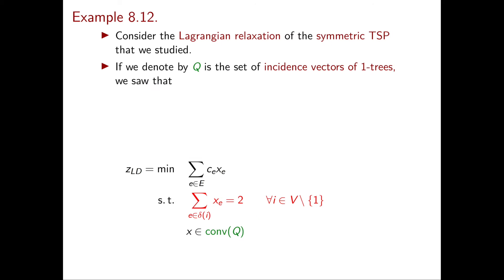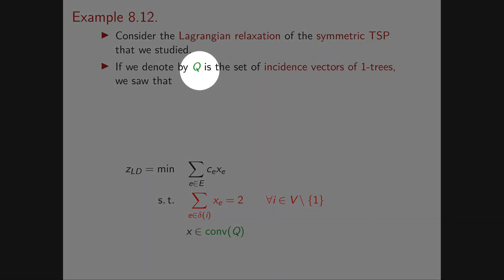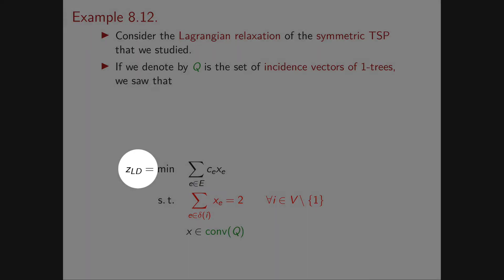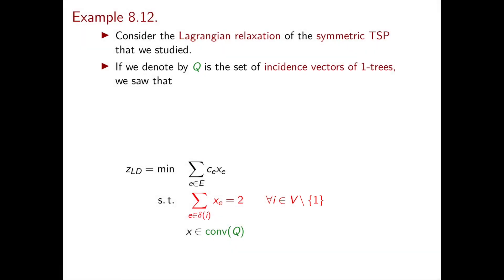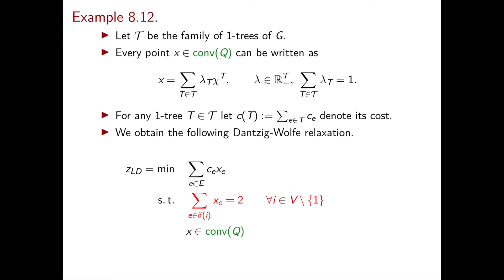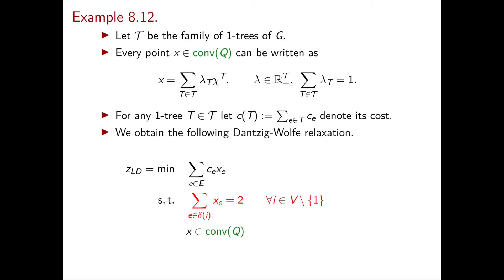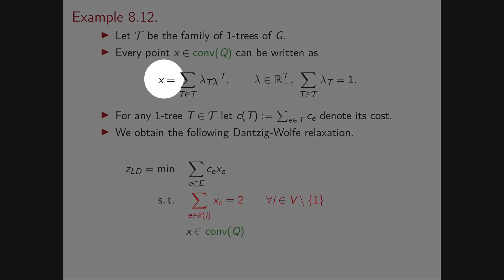As an example, consider the symmetric TSP and its Lagrangian relaxation studied earlier. The set Q was the set of incidence vectors of 1-trees, and the Lagrangian dual took exactly the form of maximizing cx over conv(Q) subject to degree constraints for every node different from node 1. To write the Dantzig-Wolfe relaxation, let T be the family of 1-trees of G. Every point in conv(Q) can be written as a convex combination of incidence vectors of 1-trees, so x takes the form Σ_{T∈T} λ_T χ^T.